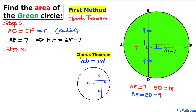Let's recall the intersecting chords theorem. When two chords intersect inside a circle, the theorem states that the product of the parts of one chord equals the product of the parts of the other chord — that is, A times B equals C times D.